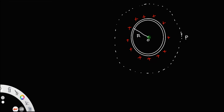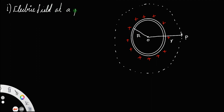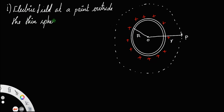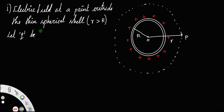For that, we have to take a convenient Gaussian surface — a spherical Gaussian surface through this point P. Let r be the radius of the spherical Gaussian surface. Case 1: electric field at a point outside the thin spherical shell, that is, r greater than the radius of the spherical shell. Let Q be the total charge on the shell.